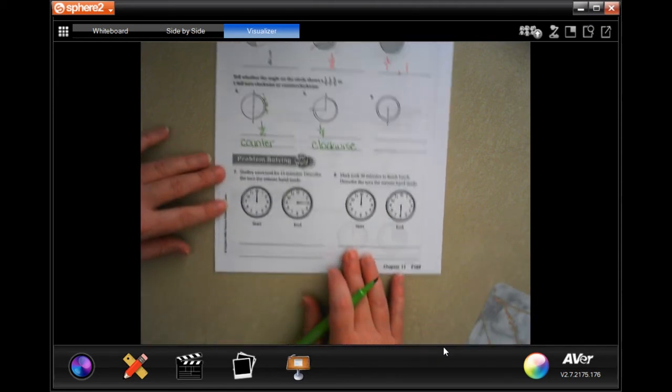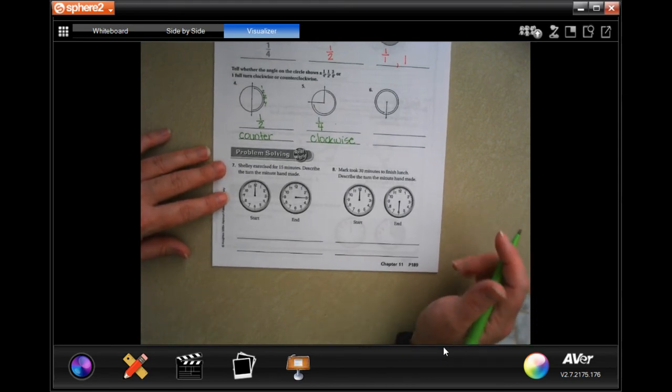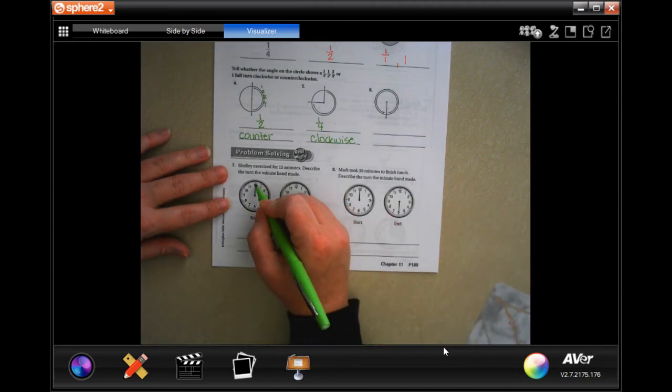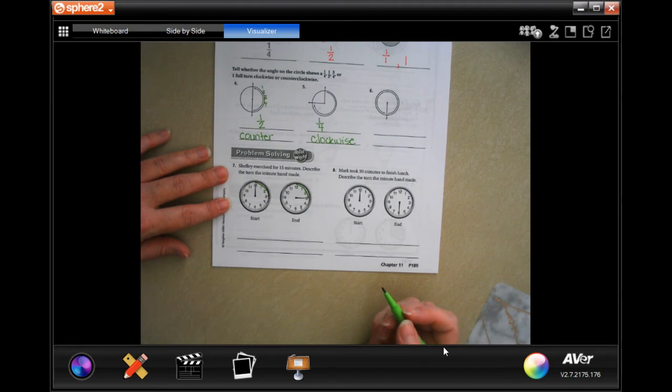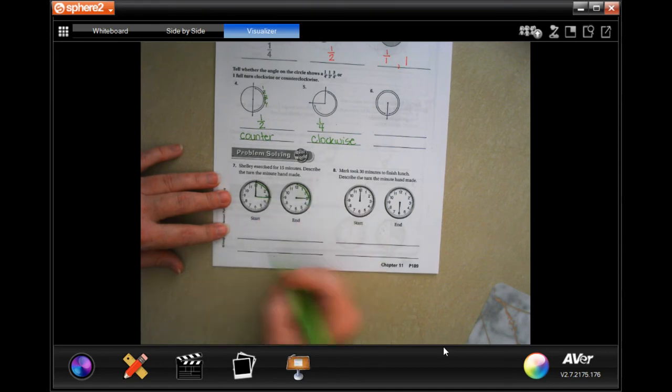Number seven: Shelly exercised for 15 minutes. Describe the turn the minute hand made. Well, the minute hand went from the 12 to the 3, so it made a quarter turn. It turned a quarter of the way, so one quarter turn, and it went according to the numbers so it's clockwise.